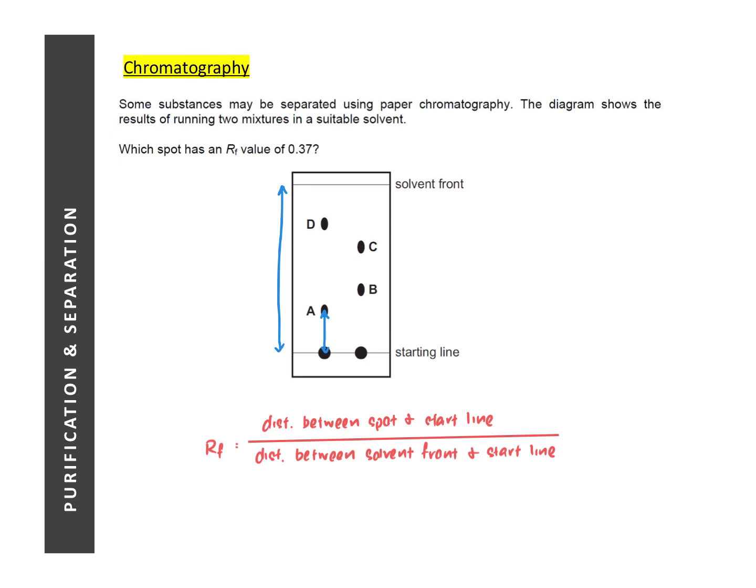So if the spot is found at the start line, the RF value would be calculated as zero. If the spot is found at the solvent front, it would be calculated as one. If the spot is found midway between the start line and the solvent front, then it would have an RF value of 0.5.